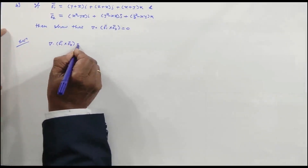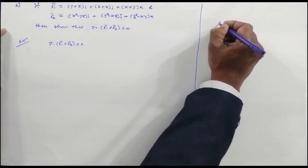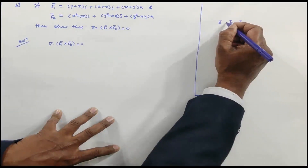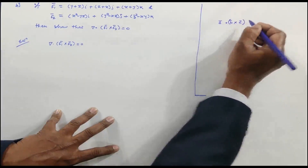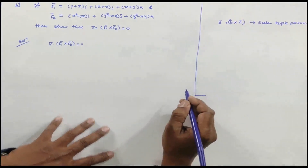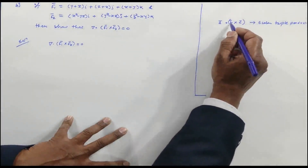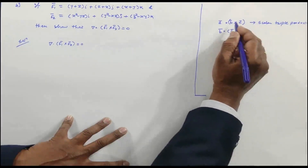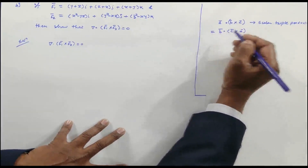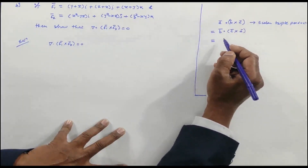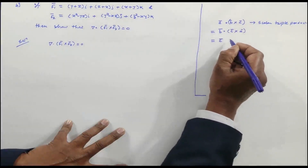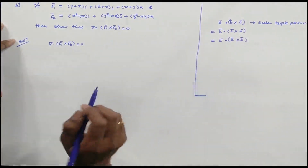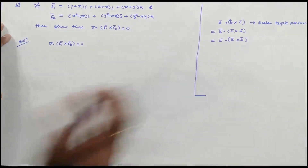The expression del · (F̄₁ × F̄₂) is a scalar triple product involving the vector operator del. Using the cyclic property of scalar triple products — where [A, B, C] = [B, C, A] = [C, A, B] — we can rearrange. Since del is a vector, this can be rewritten as F̄₁ · (del × F̄₂) or equivalently F̄₂ · (del × F̄₁), choosing which form is more convenient.